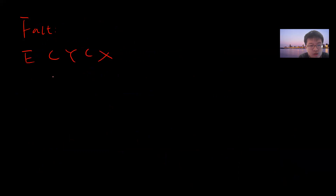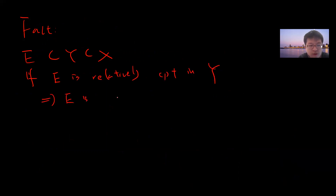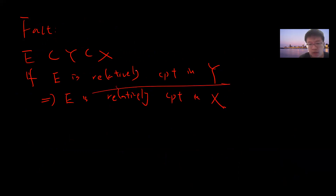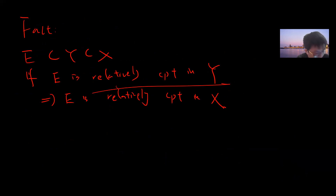The fact is that if E ⊂ Y ⊂ X, and E is relatively compact in Y, then E is compact in X. Compact is a more powerful idea compared to open. We will prove this.